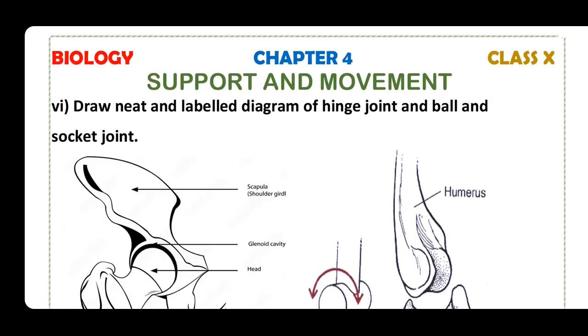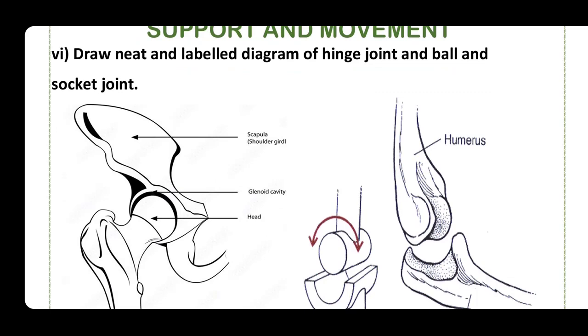Question number six: draw a labeled diagram of a hinge joint and a ball and socket joint.